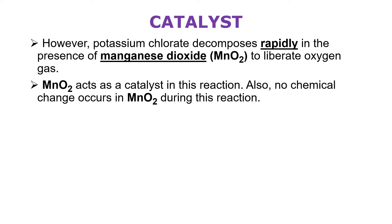In companies that manufacture oxygen cylinders, they use potassium chlorate — they heat it and the oxygen gas released is stored in cylinders and supplied to hospitals for patients with breathing problems, or to mountaineers climbing high mountains. Since this reaction is very slow, they add manganese dioxide to speed it up so they can produce more oxygen and manufacture more oxygen cylinders.